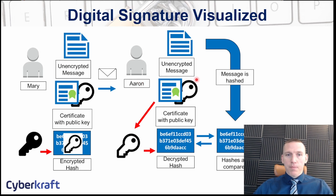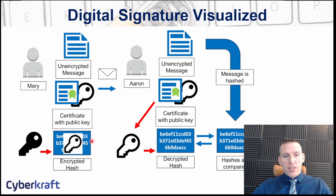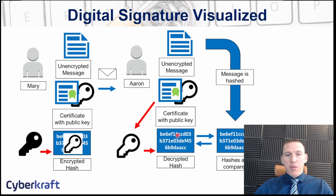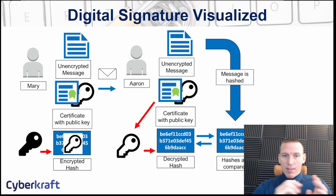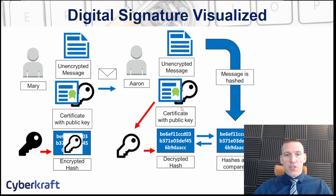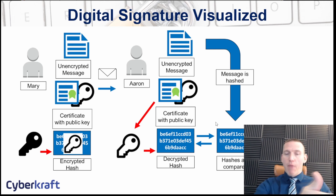Aaron now has a copy of Mary's public key and the certificate containing that encrypted hash. Aaron hashes the message he received and compares it to the hash that was included with the digital certificate. If the two hashes match, Aaron knows that Mary sent the message, that integrity was maintained, and the message wasn't tampered with in any way — because the message was encrypted using Mary's private key, and she included her public key inside the certificate. That comparison proves Mary's identity.